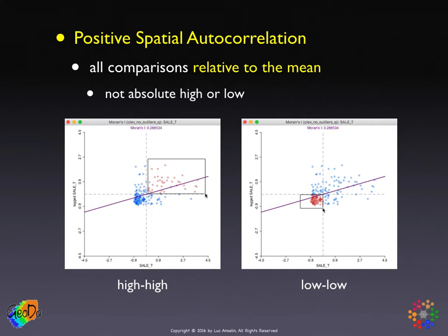Positive spatial autocorrelation is decomposed into what we call high-high and low-low — but high and low are relative to the mean. High-high points have standardized values larger than zero with spatial lags also larger than zero. Low-low points, in the lower left quadrant, have standardized values less than zero and are surrounded by neighbors also less than zero in standard deviational units.